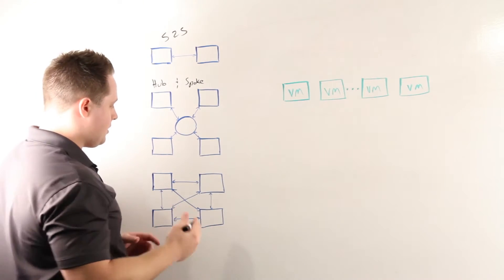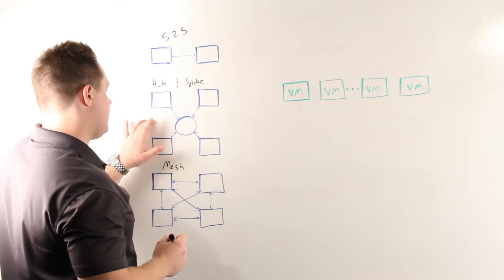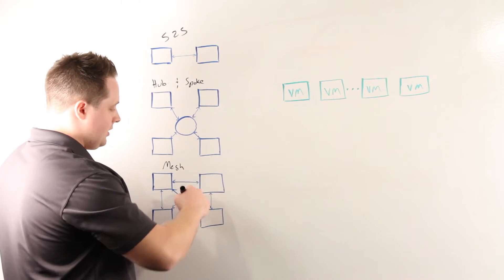Last but not least is what we call full mesh. This is not site-to-site and not hub-and-spoke. Essentially, you can replicate from any site to any site bi-directionally.